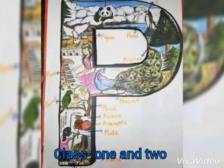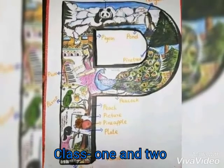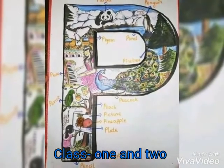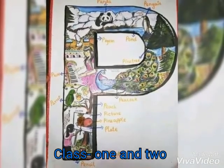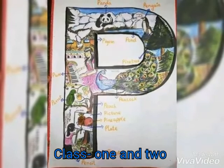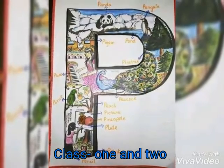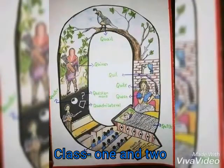P for pond, pond means bukur. P for pen, pen means column.